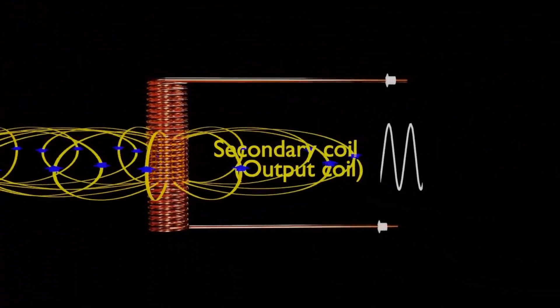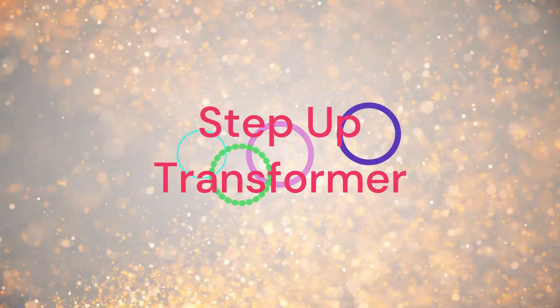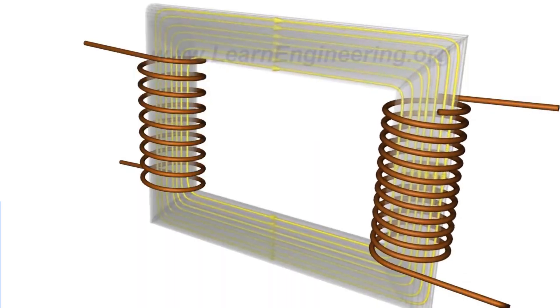Now, let's differentiate between step-up and step-down transformers. Step-up transformers: In a step-up transformer, the secondary coil has more turns than the primary coil.